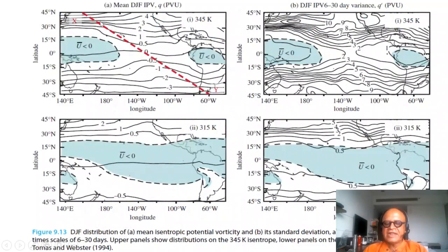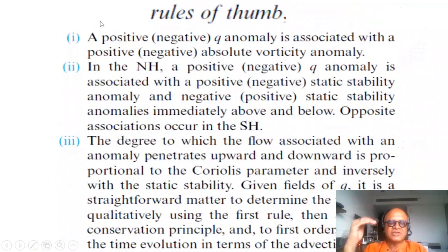If you know the isentropic potential vorticity between two isentropes, and if you know the mass distribution below and the static stability and a few properties, there are a few rules of thumb that allow you to derive various other quantities like winds and various circulation patterns, geopotential, etc.